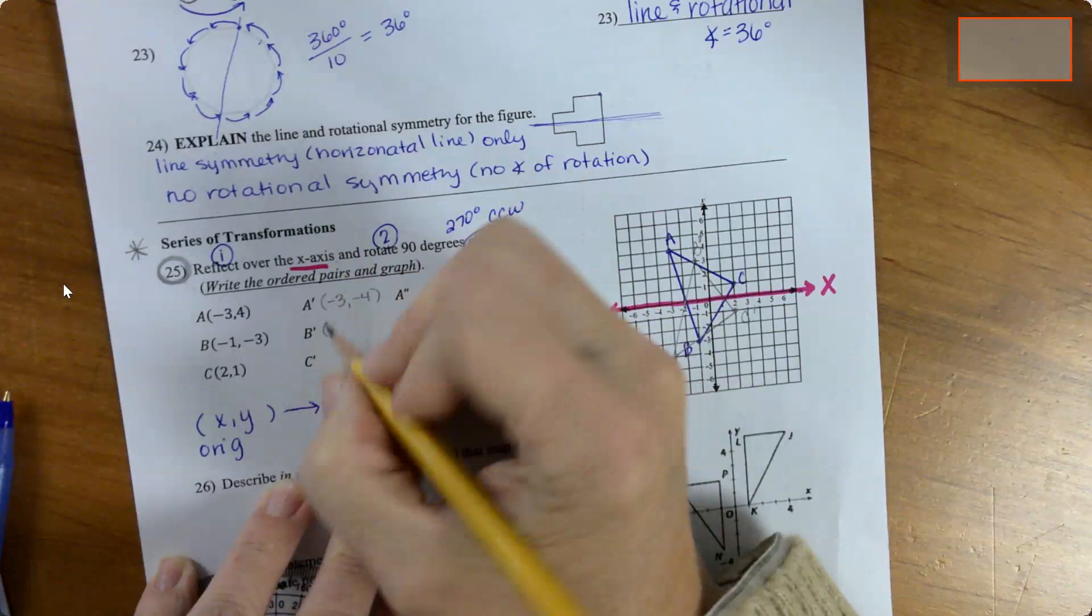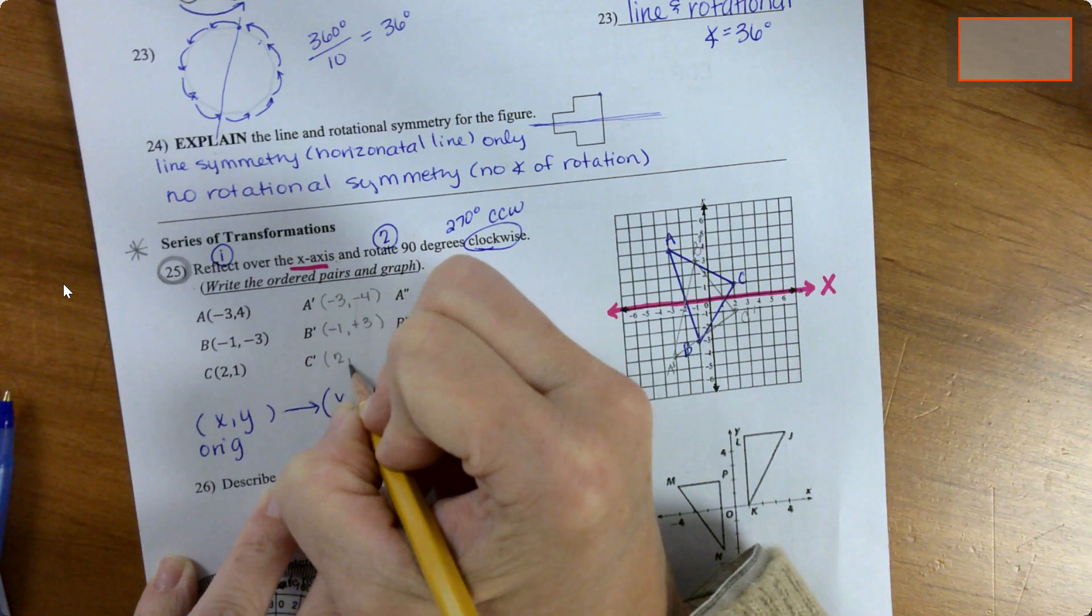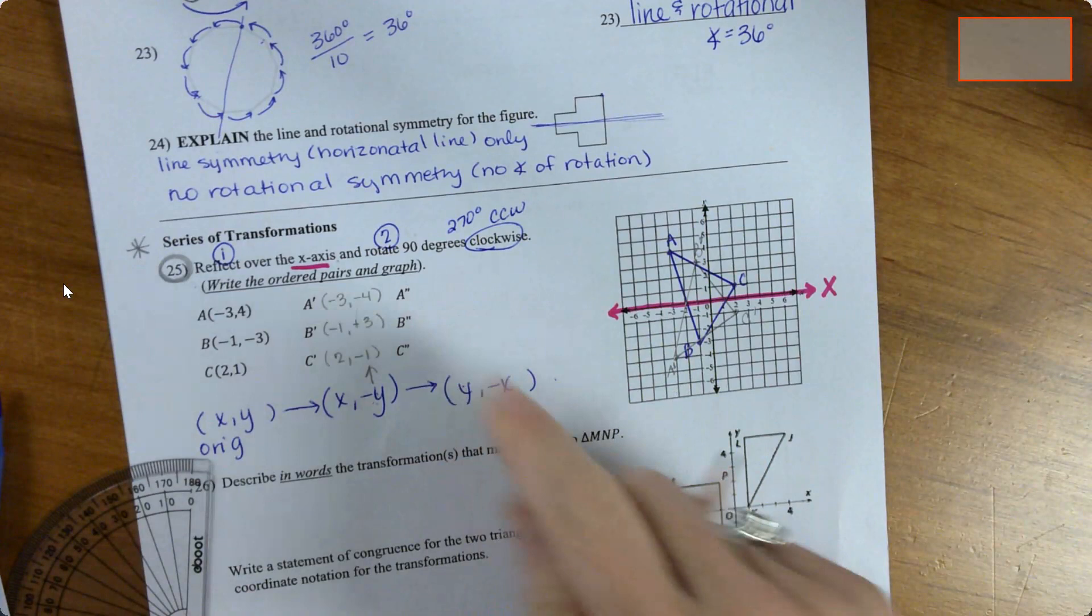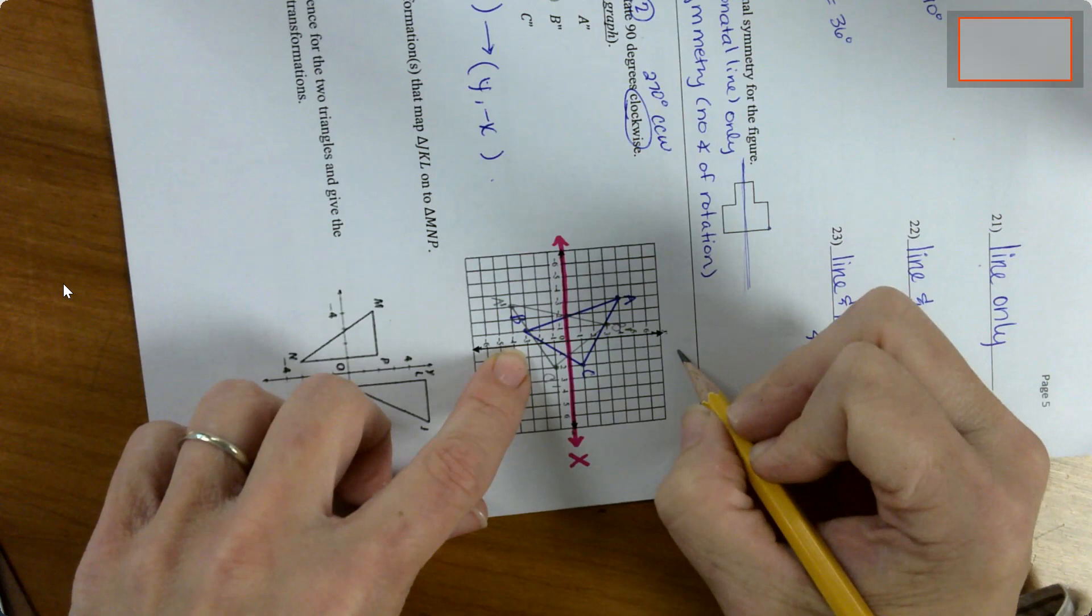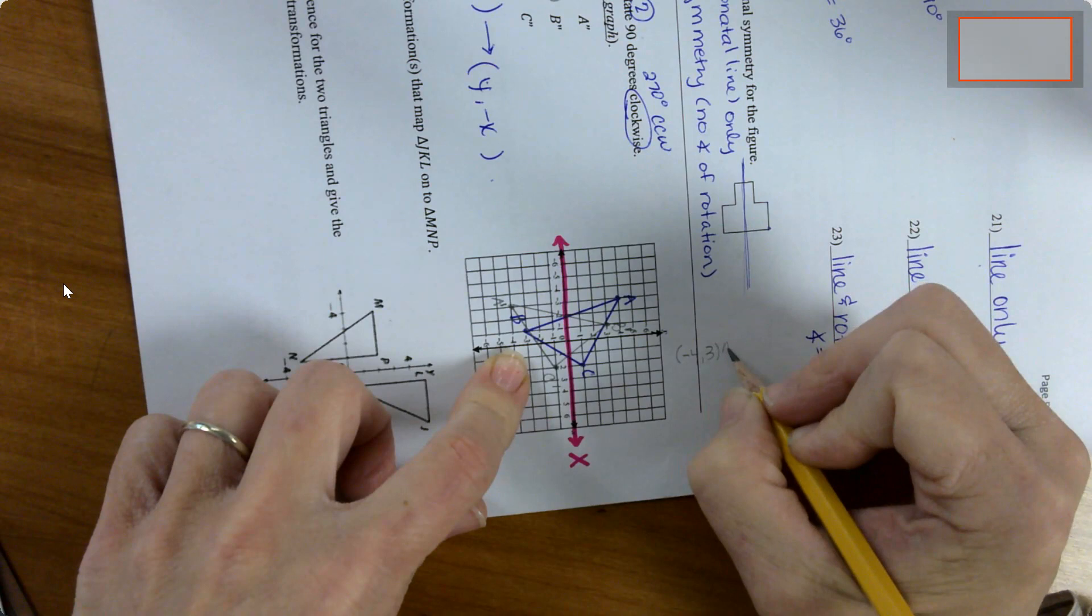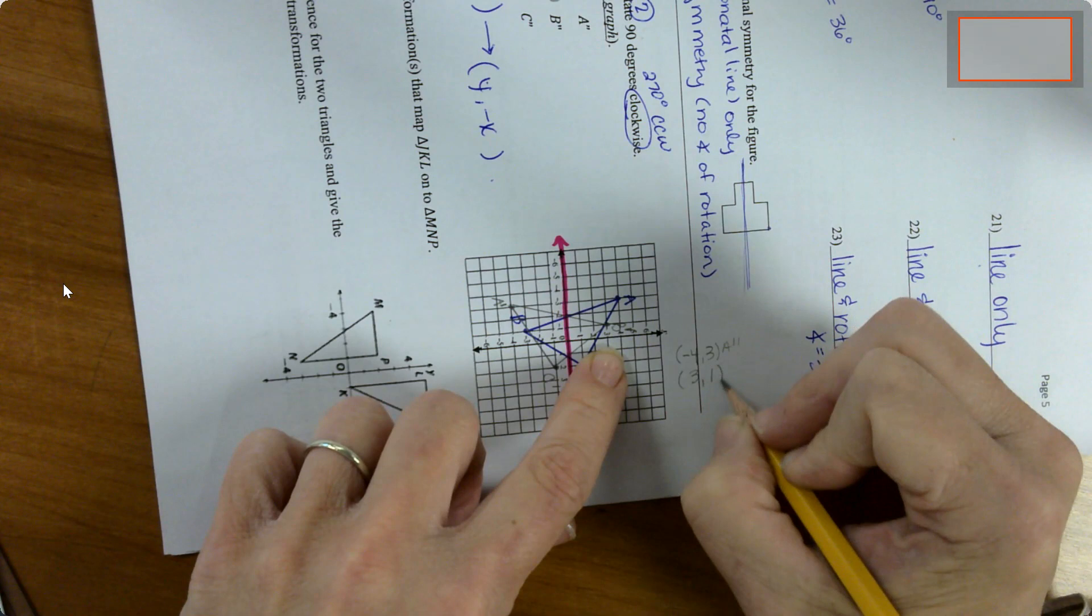And next I'm gonna rotate it 90 degrees clockwise. That means it's gonna go like this, so it's gonna look like this in a minute. If I wanted to write that down, that would be negative 4, positive 3 would be A double prime. B would be 3, 1, and C double prime would be negative 1, negative 2. So I'm just kind of jotting those down which I'll be able to use here.